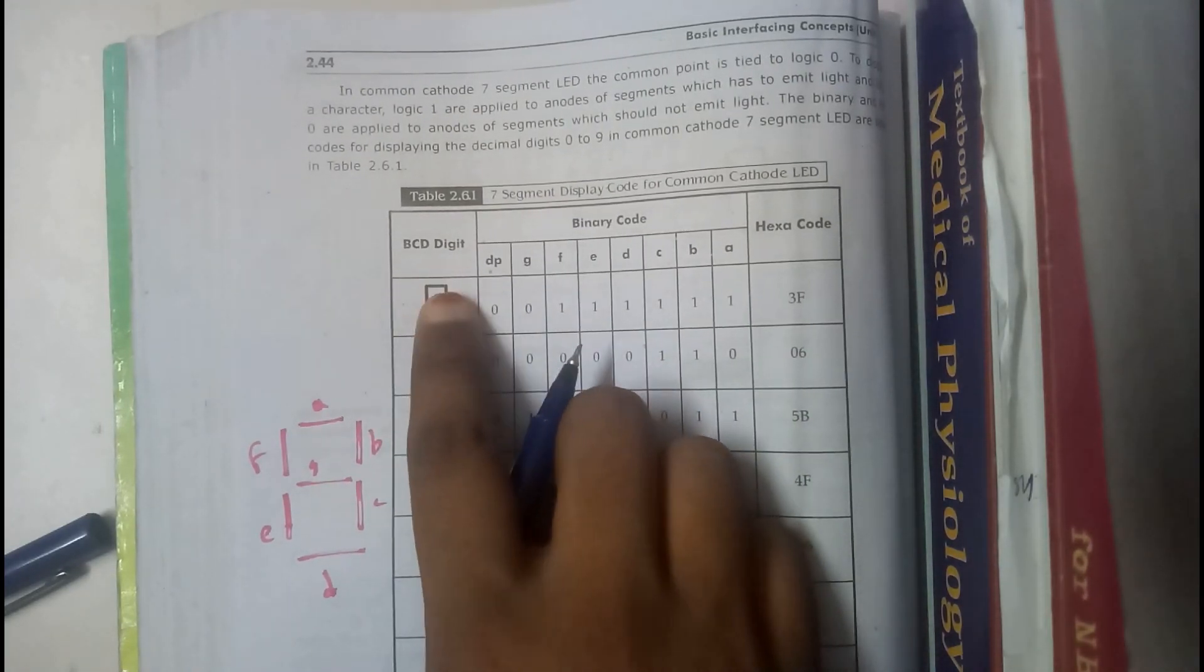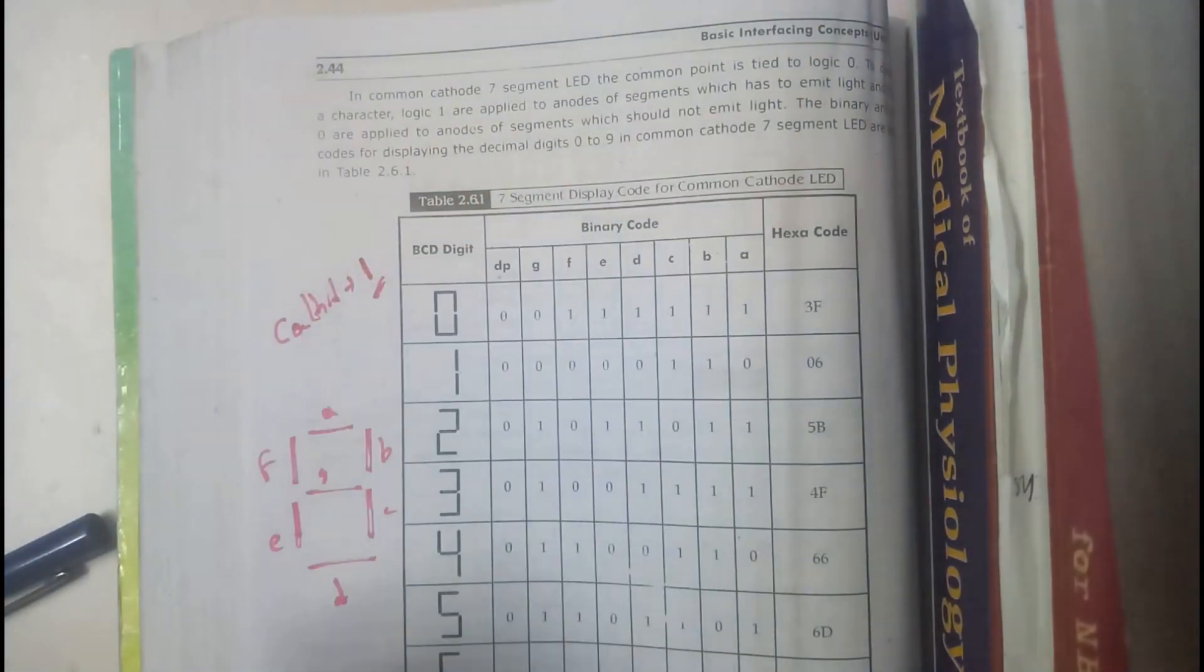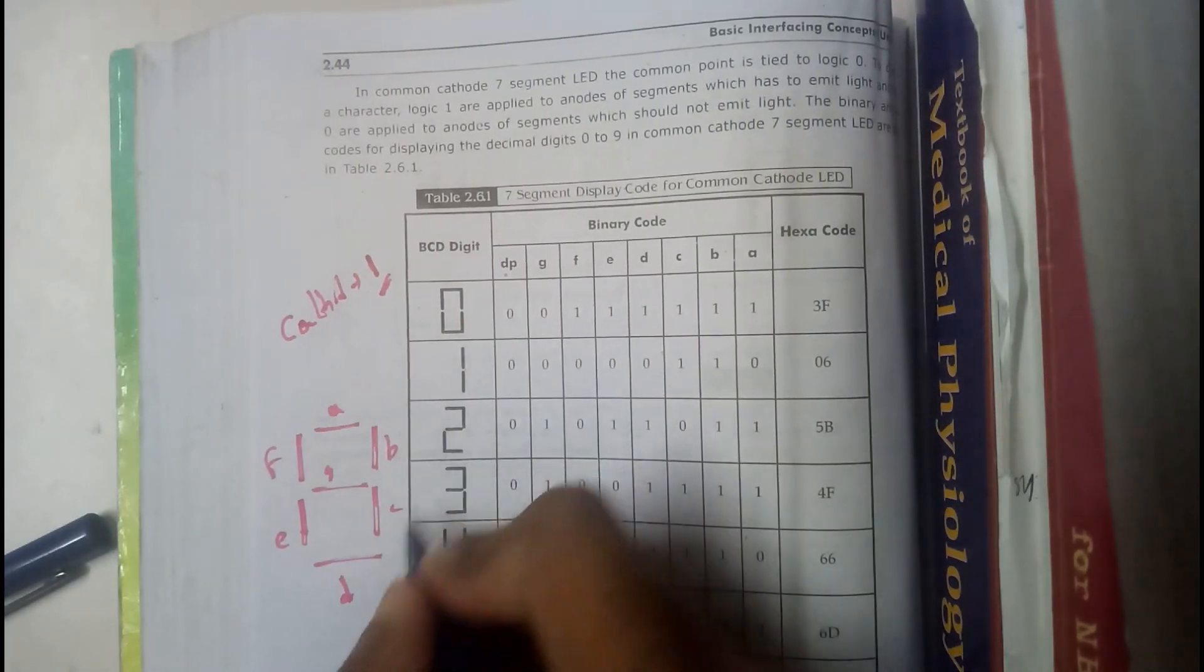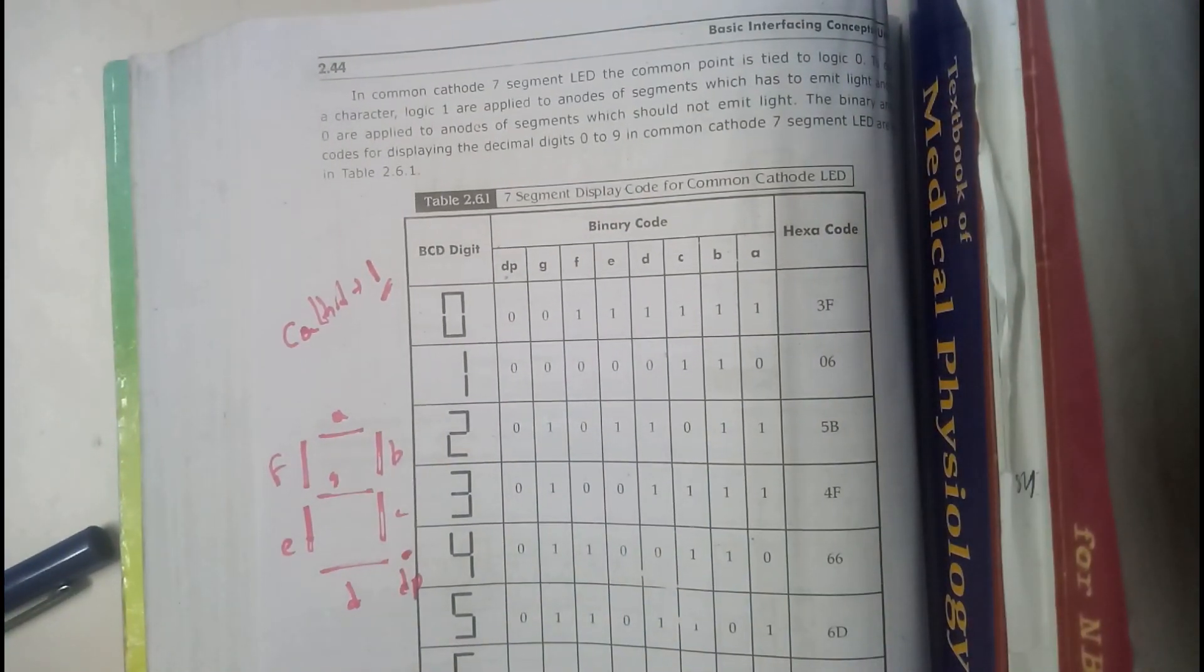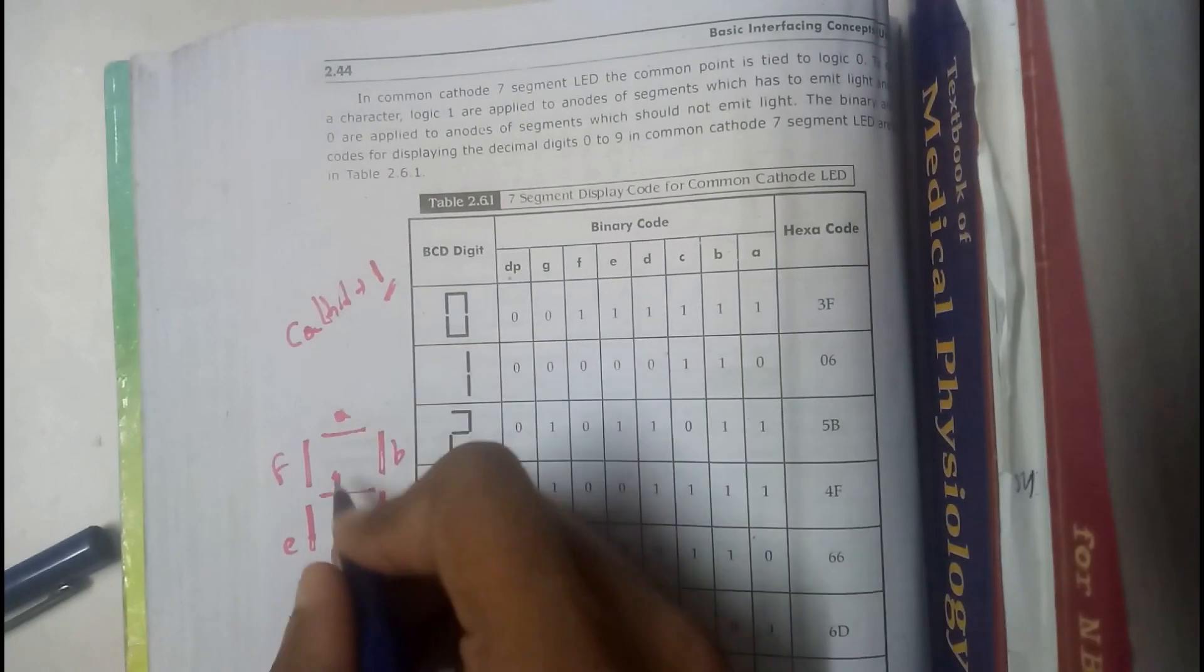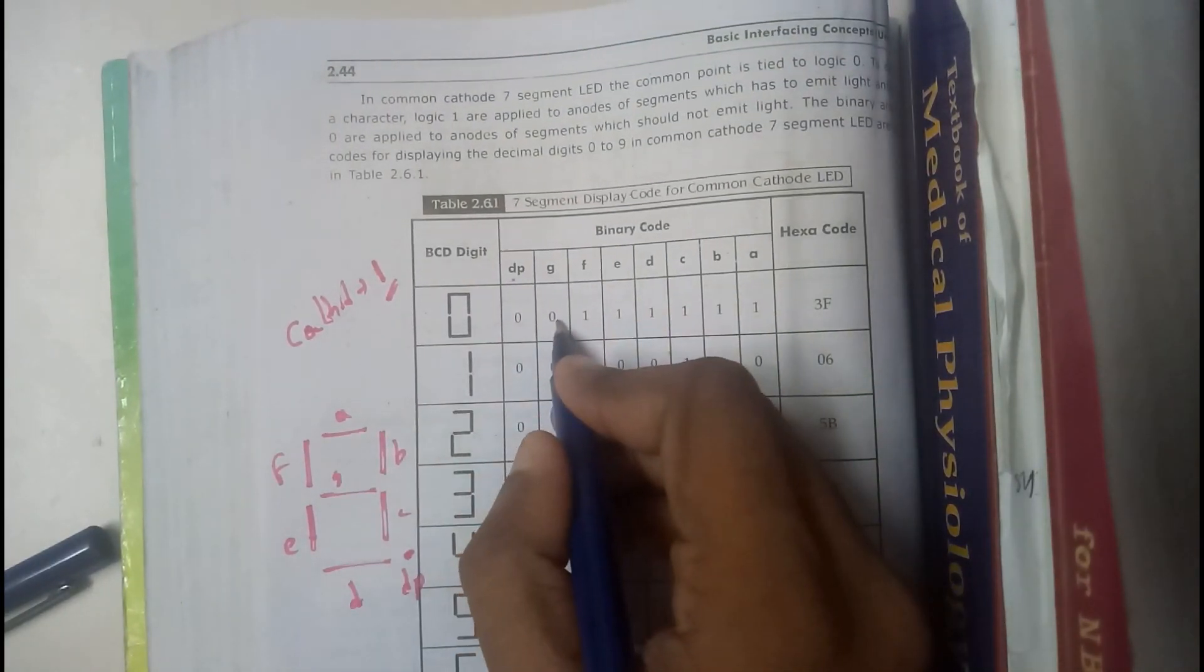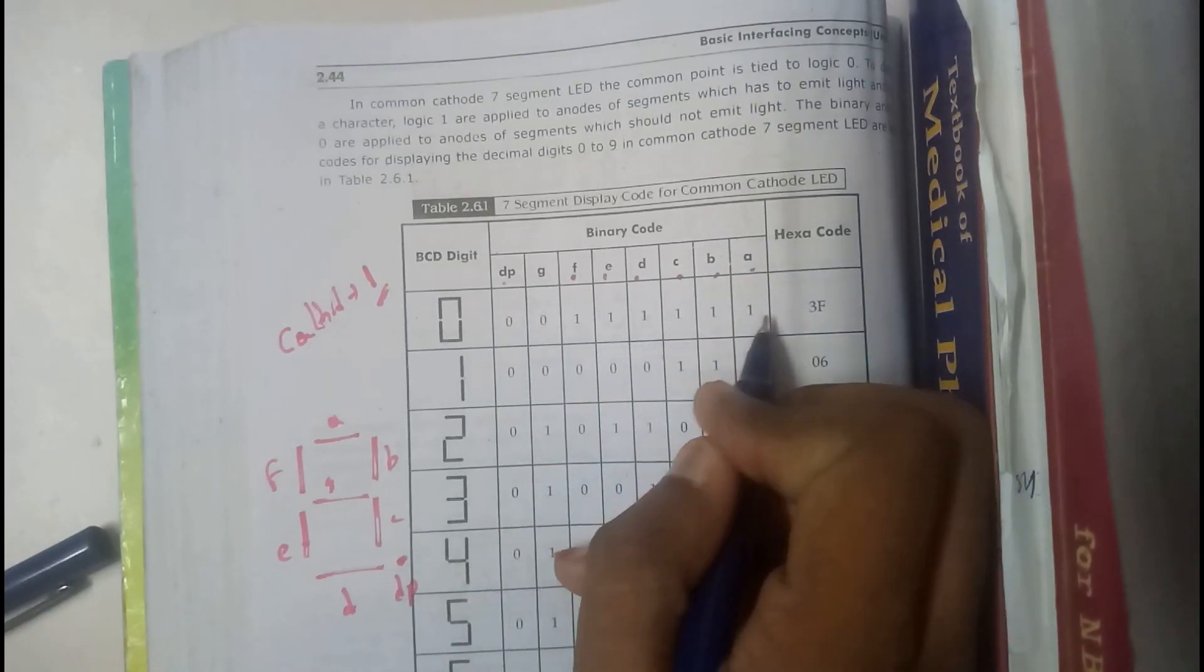Okay, a, b, c, d, e, f, and g. So if we want to represent zero, we are doing in cathode, right? So remember, in cathode we represent the active ones with one. So here there should be no... here we'll be having decimal point. So there is no need for decimal point, so that's the reason why DP equals to zero and we also know g. So g equal to zero. So other all f, e, d, c, b, a, they all should be one.